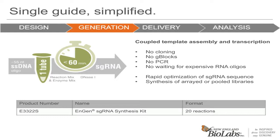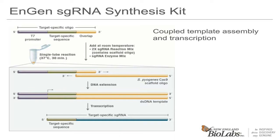That target-specific oligo only requires you to specify the important part — the 20-nucleotide target sequence. We'll take care of designing the rest of the oligo, making sure it has a T7 promoter and a specific overlap sequence that will be used in the kit. That overlap sequence anneals to a scaffold oligo contained in the reaction mix. The scaffold oligo contains the tracer part that is specific to S. pyogenes, so it's universal and included in the mix. After you add the reagents together with your oligo, a DNA polymerase in the tube will extend the two primers and create a double-stranded DNA template for RNA transcription. In the same tube, at the same time, T7 RNA polymerase will find those newly made double-stranded templates and start transcribing RNA. We've coupled template assembly and transcription in one quick and easy reaction.